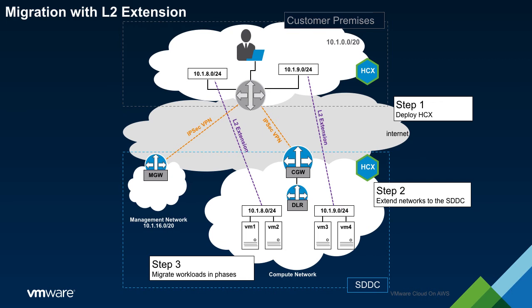Taking a couple of specific traffic flows as examples, consider the network path between VM1 and VM2. In this scenario, both VMs exist within the SDDC and are attached to the same logical network. Therefore, traffic flows between them will remain local to the SDDC.